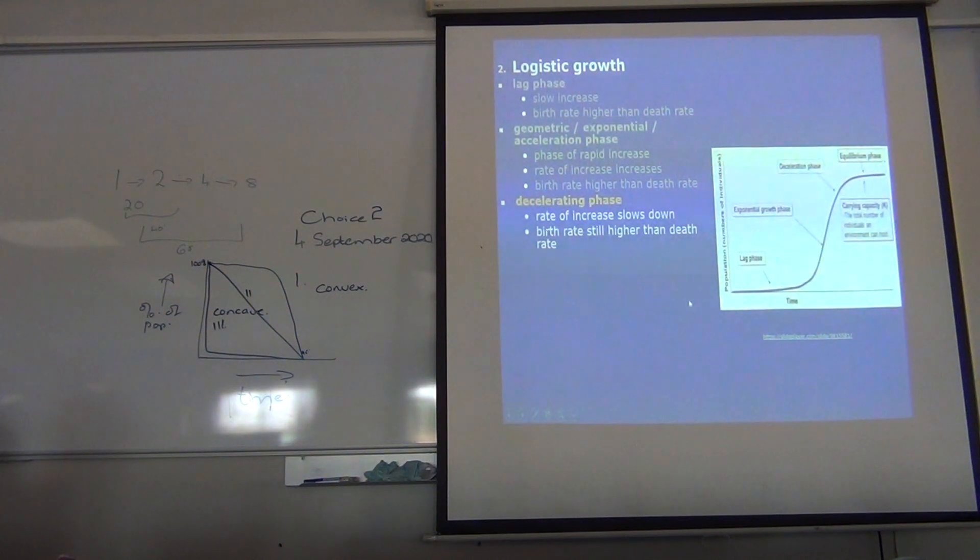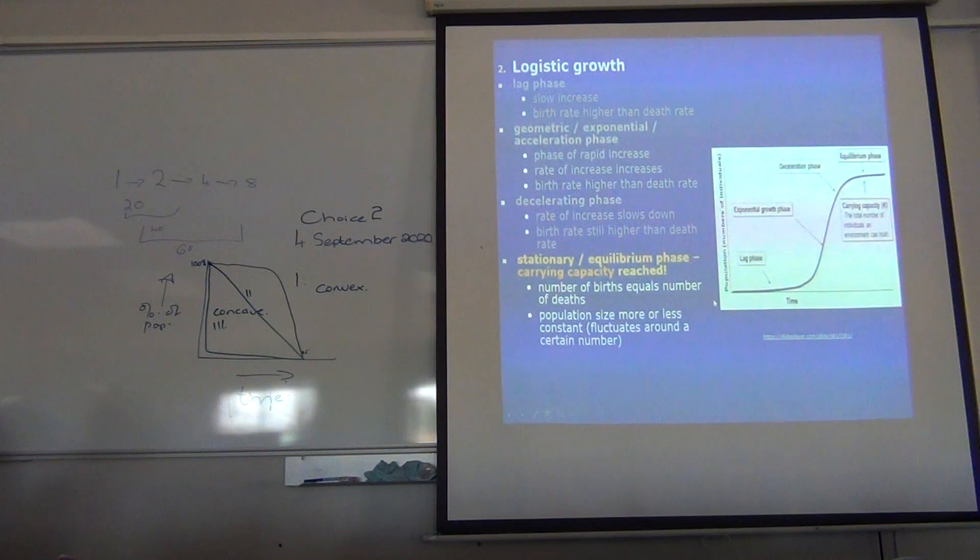Decelerating phase. Greater increase slows down. Well, the birth rate is still higher than the death rate. Okay.